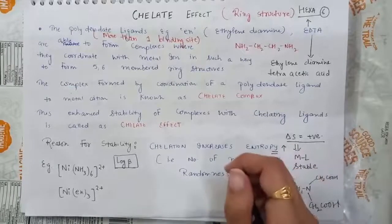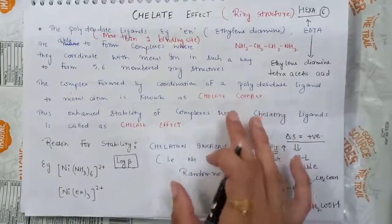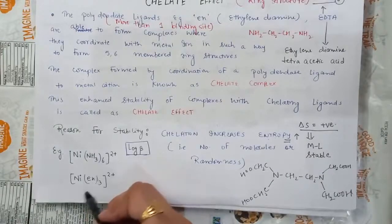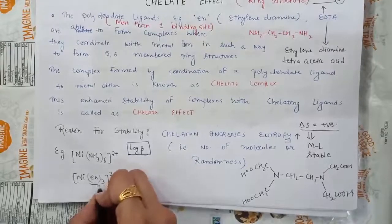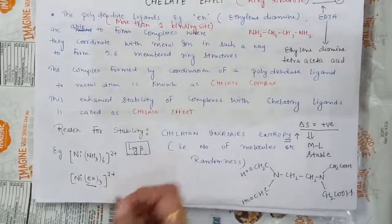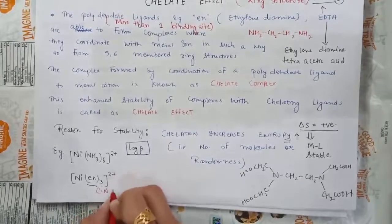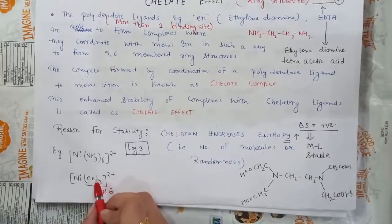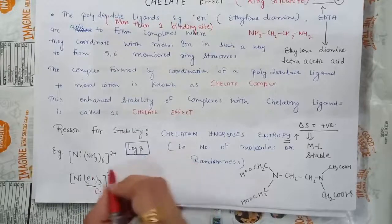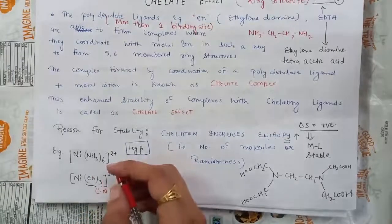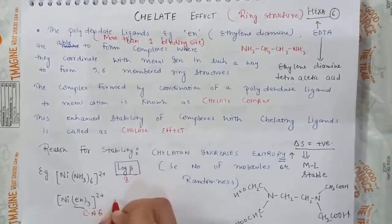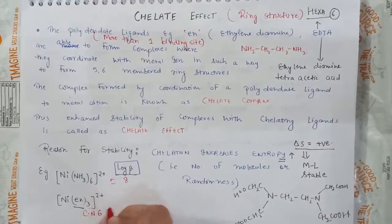Let us look at some examples related to chelate complexes. Comparing Ni(NH3)6 and Ni(en)3 — in Ni(en)3, ethylene diamine is present and coordinated with the nickel atom with coordination number 6, because one EN has 2 points of attachment, so 3 EN gives coordination number 6. The log beta values, when compared, were found to be around 8 for Ni(NH3)6 and around 18 for Ni(en)3, which is a chelate complex.